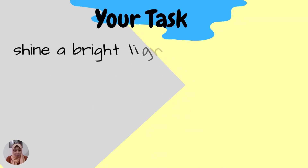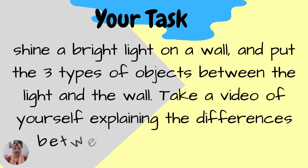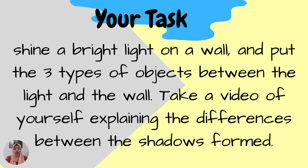So what is your task for today? I want you to bring a source of light and three different types of objects — translucent, transparent, and opaque. Shine a bright light on a wall and place the three types of objects between the light and the wall. Take a video of yourself explaining the differences between the shadows formed. Tell me: did you see any shadow when you put a transparent object between the wall and the light source? What about a translucent object — what was the shadow like? And the same with the opaque object.